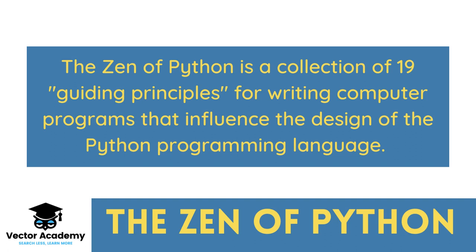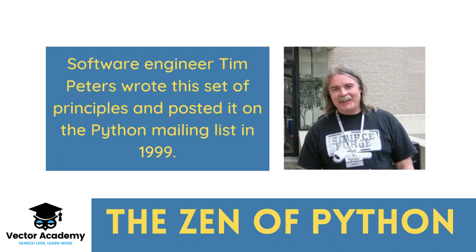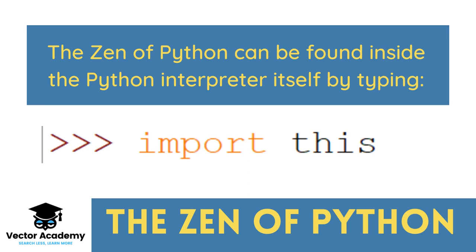The Zen of Python is a collection of 19 guiding principles for writing computer programs that influence the design of the Python programming language. Software engineer Tim Peters wrote this set of principles and posted it on the Python mailing list in 1999. The Zen of Python can be found inside the Python interpreter itself by typing: import this.